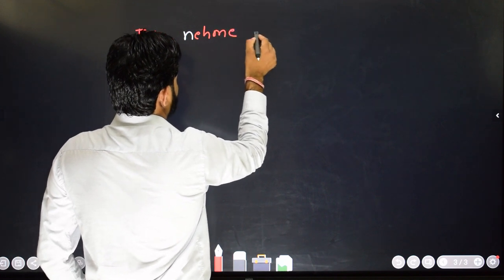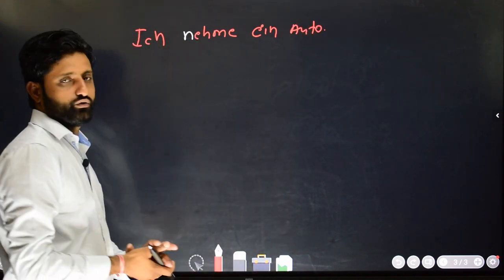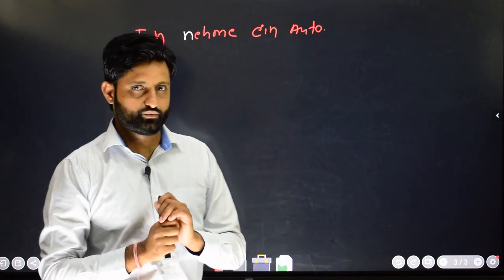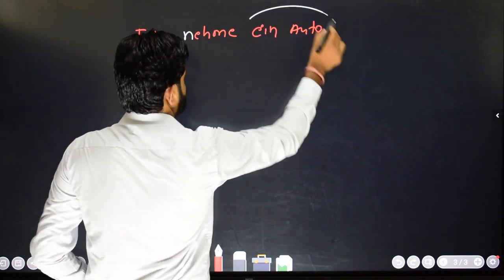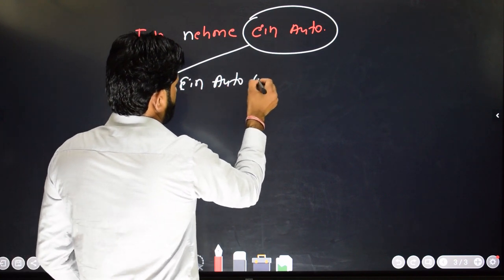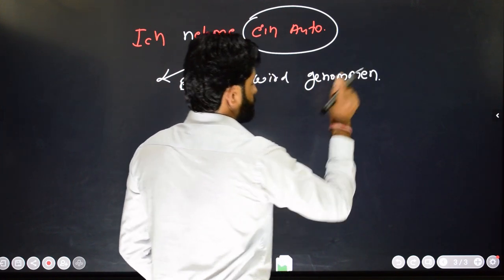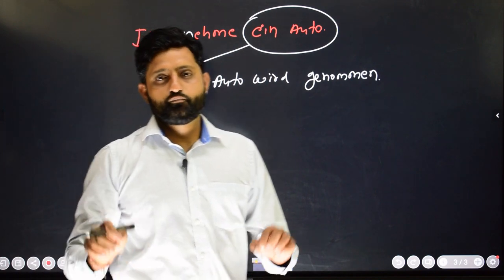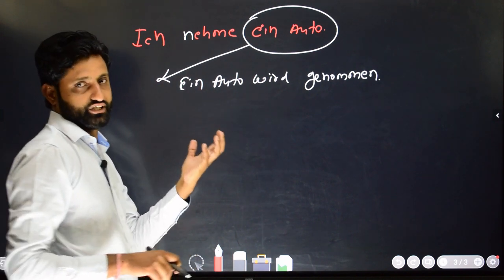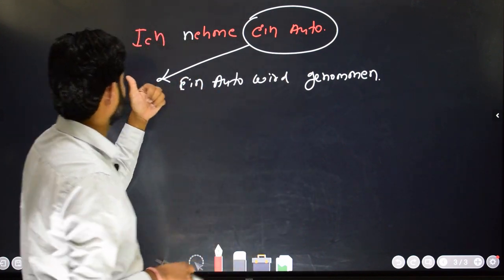Let's take more examples. 'Ich nehme ein Auto.' This is the active voice sentence. You need to convert this sentence into passive voice — it's a very simple example. The object 'ein Auto' will become the subject. So: 'Ein Auto wird genommen.' Here, instead of using the subject, we have the object as the subject. The action is more important than the subject.